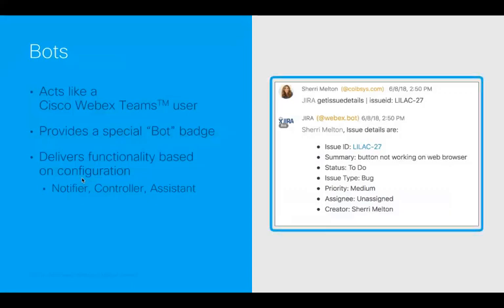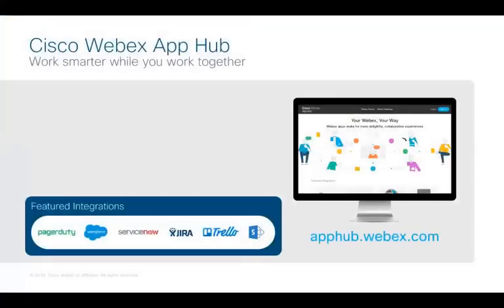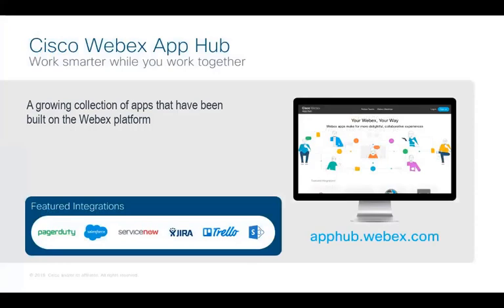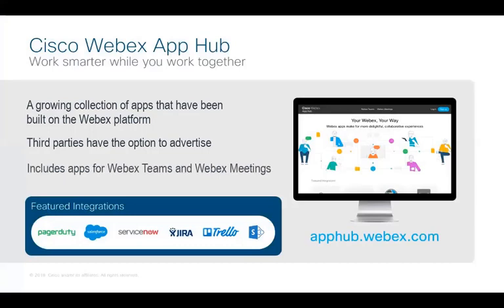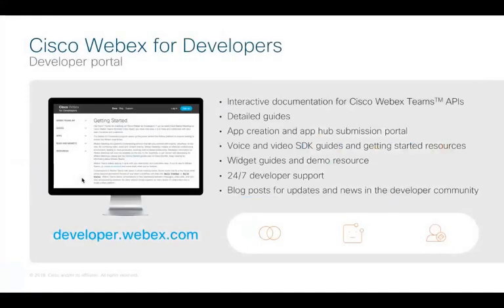Here you can see a bot that is connected to a Jira instance, allowing us to get issue details for our project. Where do we post these integrations and bots for our users to consume? That would be on the WebEx App Hub — a growing collection of apps that have been built on the WebEx platform by both Cisco and our third-party ecosystem. Third parties have the option to advertise their apps on this site. The Hub also includes apps for WebEx Teams as well as WebEx Meetings. To learn more about how to develop on the platform, go to developer.webex.com. This is the central location for not just the APIs, bots, and integrations, but it will also include things like SDKs and widgets, and how to submit apps to the WebEx App Hub.